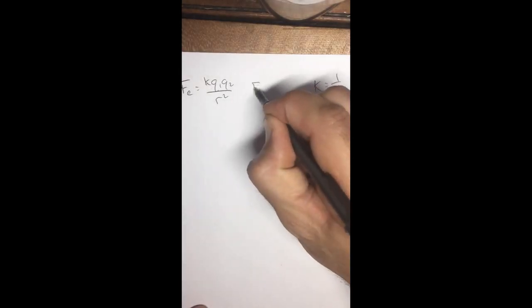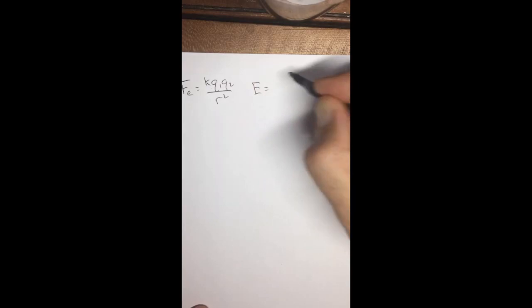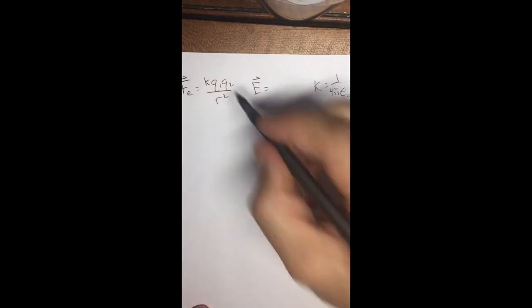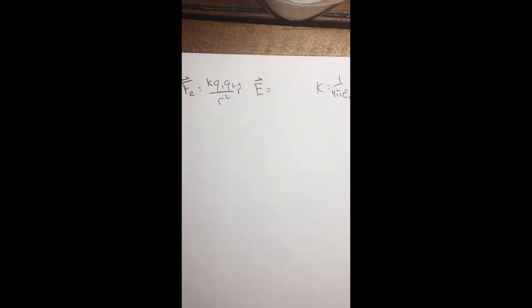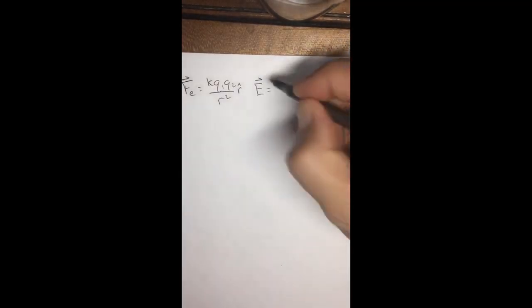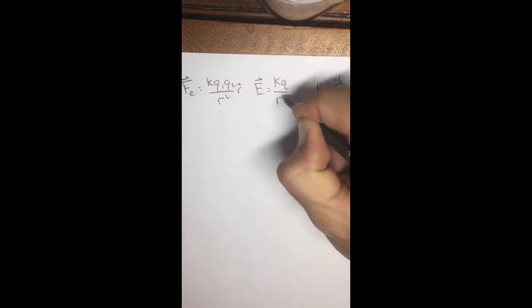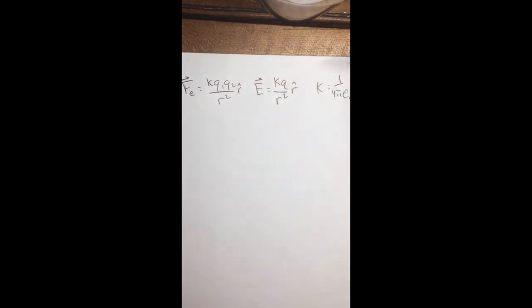Now electric field, and these are vector quantities of course in the R direction. I should put that in there also, direction of R. So that little R hat represents not a quantity but a direction, just a unit vector of 1 in the direction of the radius. The electric field would be from a single charge Q at a position R away, and that's also in the R vector.